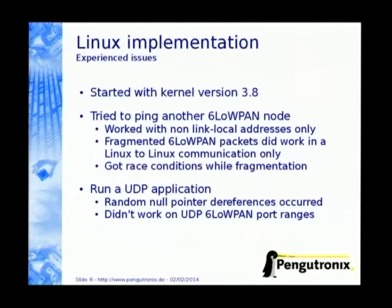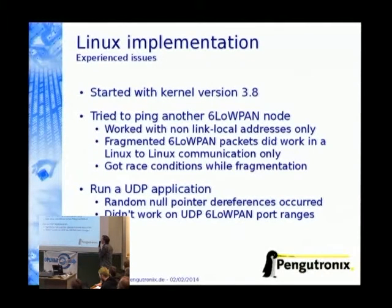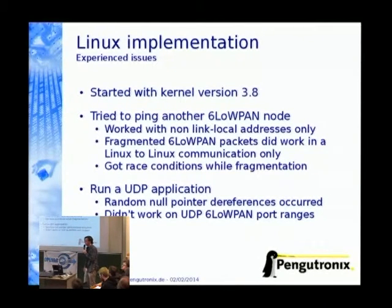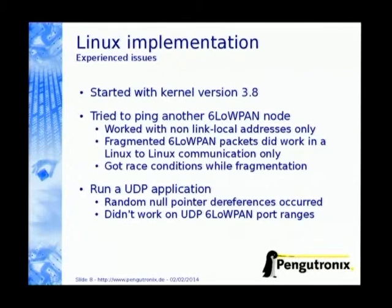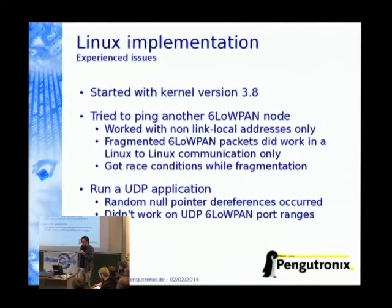So, my experience with issues. I started with kernel version 3.8 about one year ago. I tried to ping another node in a 6LoWPAN network — that's the first thing I wanted to get working. This only worked with non-link-local addresses; something was wrong with the compression of the link-local address. Fragmentation only worked on Linux-to-Linux communication, and sometimes during fragmentation I got a race condition and the whole kernel crashed and needed to be restarted. The second thing was running a UDP application, where I sometimes got a null pointer, and it didn't work on the special UDP port range I already mentioned.